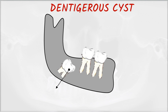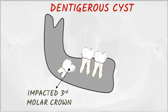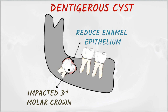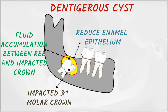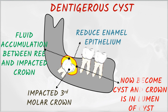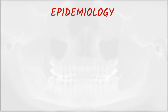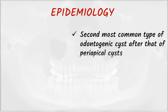This is the hard tissue or impacted third molar crown, which is surrounded by a membrane — that is the reduced enamel epithelium. In between the reduced enamel epithelium and the crown of the impacted third molar, fluid is present, which results in formation of a cyst. The crown is in the lumen of the cyst.